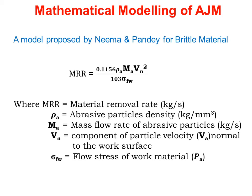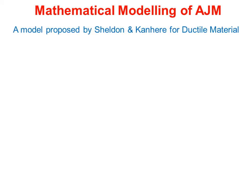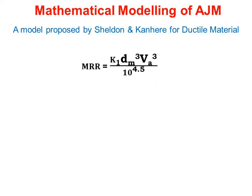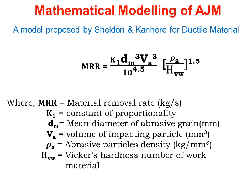The mathematical model for ductile material is proposed by Celton and Hahn: MRR = K1 × Tm³ × Va³ divided by 10^4.5 multiplied by (ρA / HVW)^1.5. Where MRR is material removal rate in kg per second, K1 is constant of proportionality, Tm is mean diameter of abrasive grain in mm, Va is velocity of impact particle, ρA is abrasive particle density in kg per mm cube, and HVW is Vickers hardness number of work material.